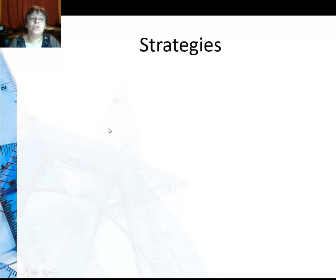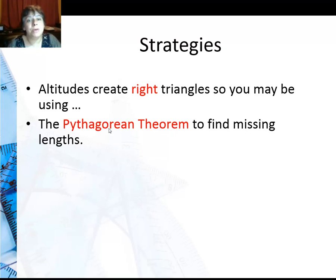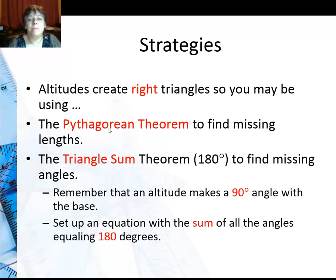Now what kind of strategies are you going to be using with these problems? The main thing is that altitudes create right triangles, so you might be using the Pythagorean theorem to find missing lengths. Additionally, you'll probably be using the triangle sum theorem to find missing angles. An altitude makes a 90 degree angle. You're going to set up an equation where 90 degrees plus the other two angles equals 180.